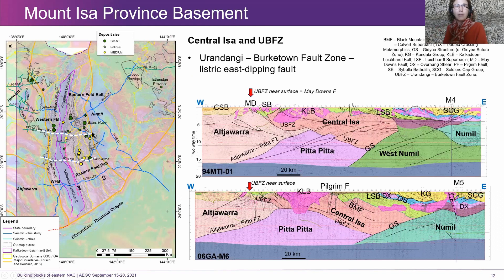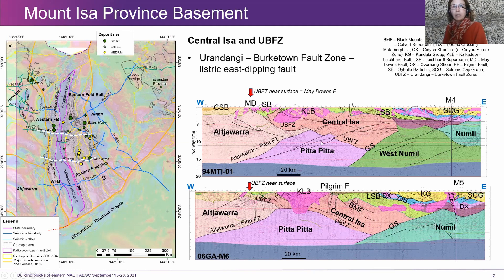On the 94 line, just south of Mount Isa, I'd suggest the Urandangi–Burktown fault zone links through probably in or around the May Downs fault. You can see the structures come together at about six to seven seconds where they really flatten, and we've got some big-scale detachments in the crust. We spent a lot of time debating whether Pitta Pitta could extend up to these relatively flat structures in the mid-crust, but based on all the seismic lines together and correlating through to CF1 further north, it makes more sense that the boundary is still east-dipping and Central Isa is a bit thicker here.